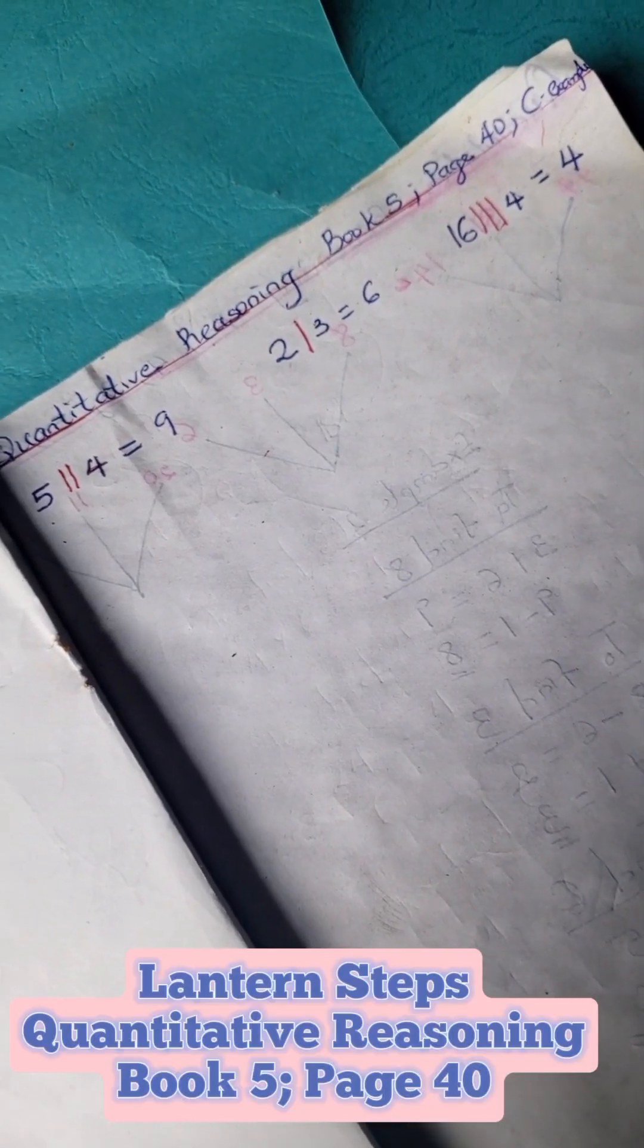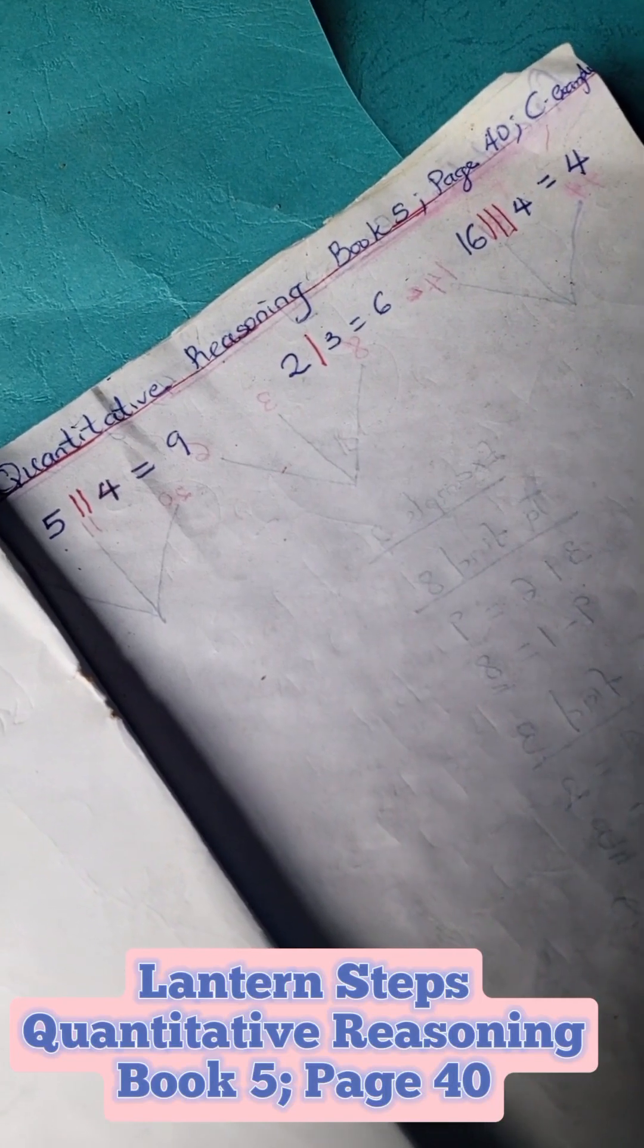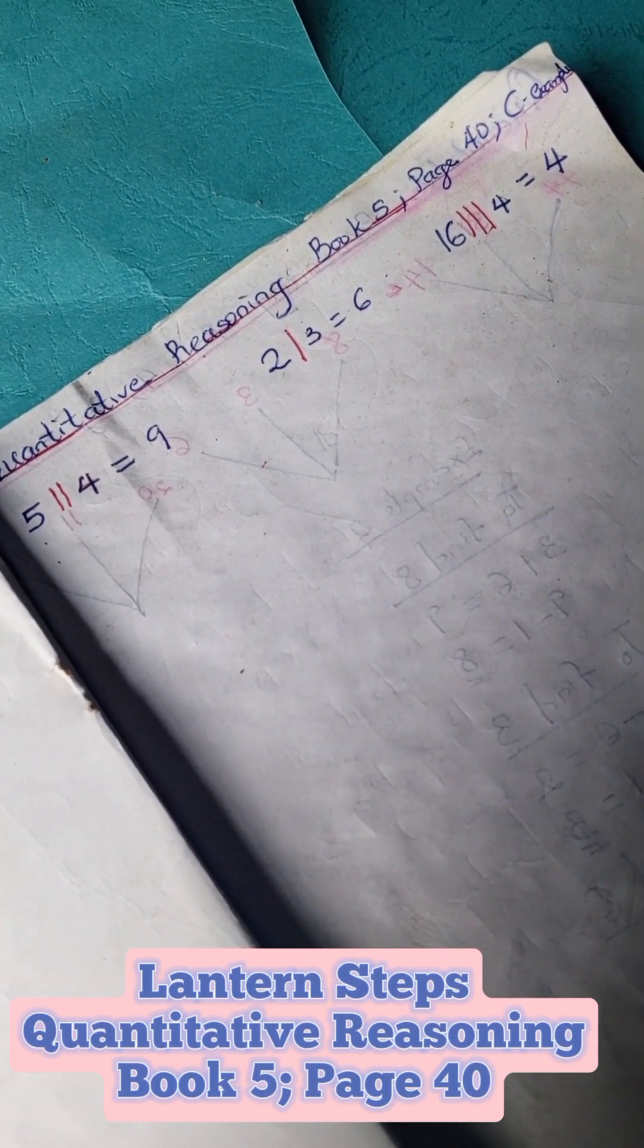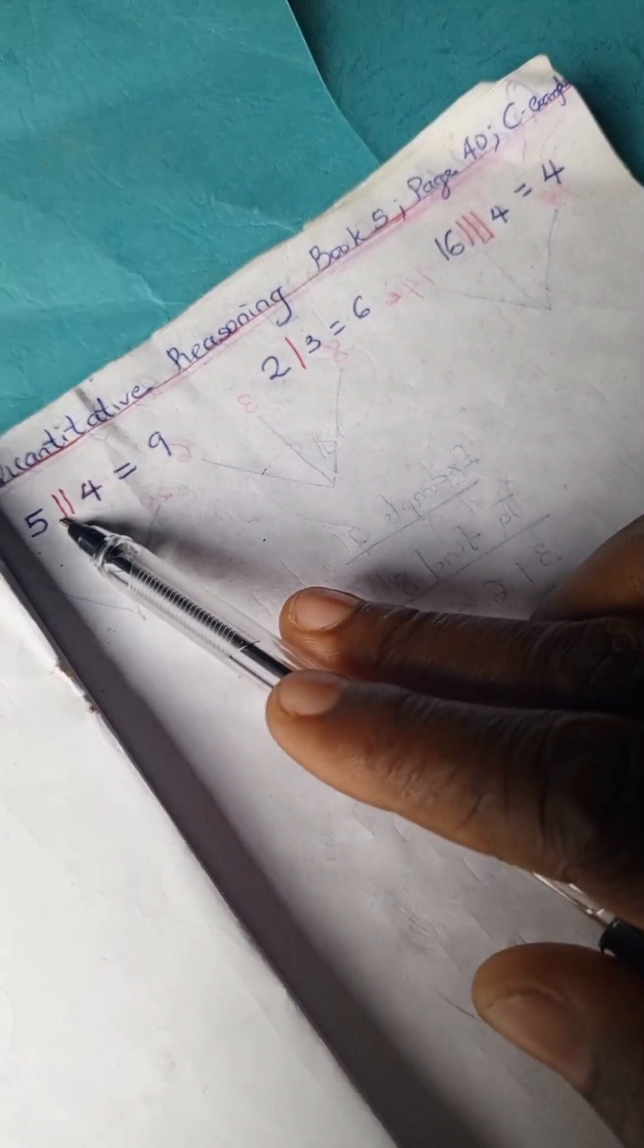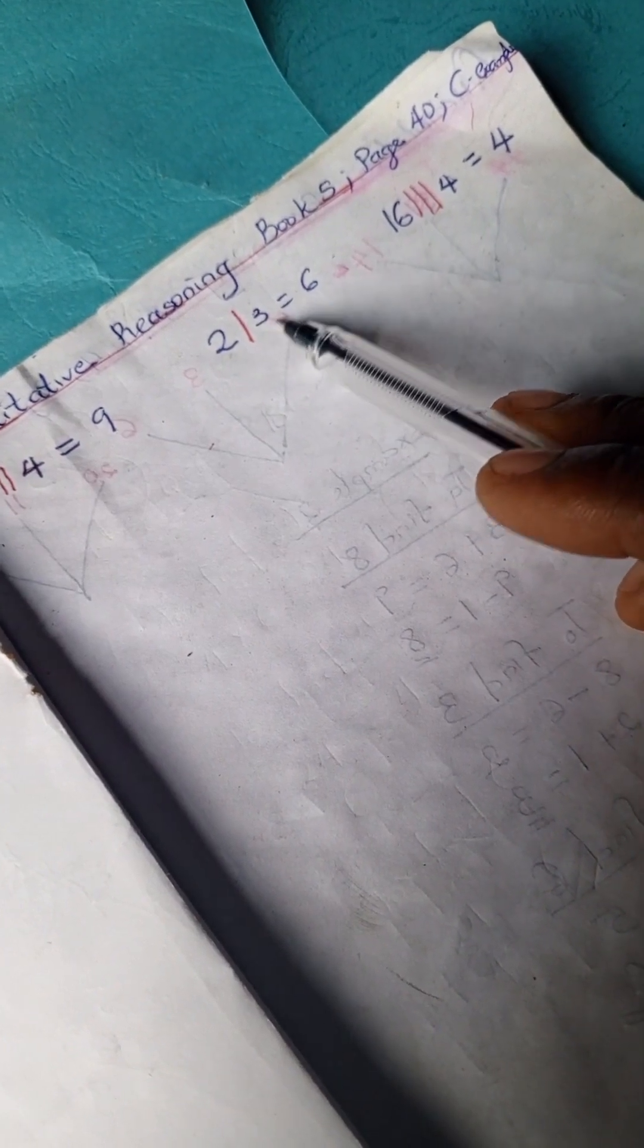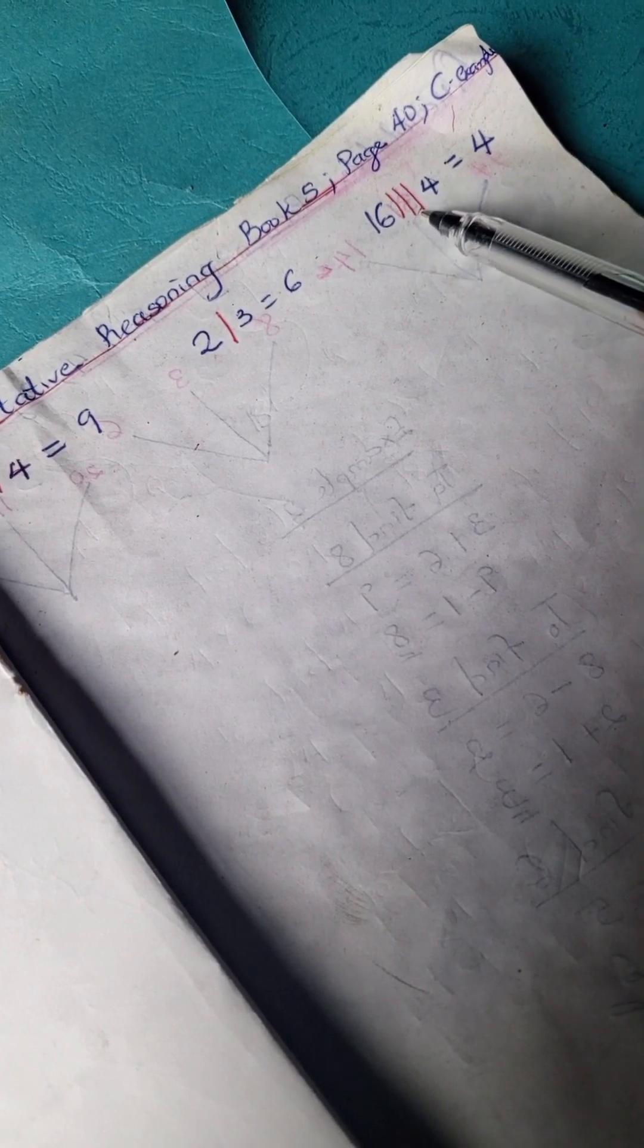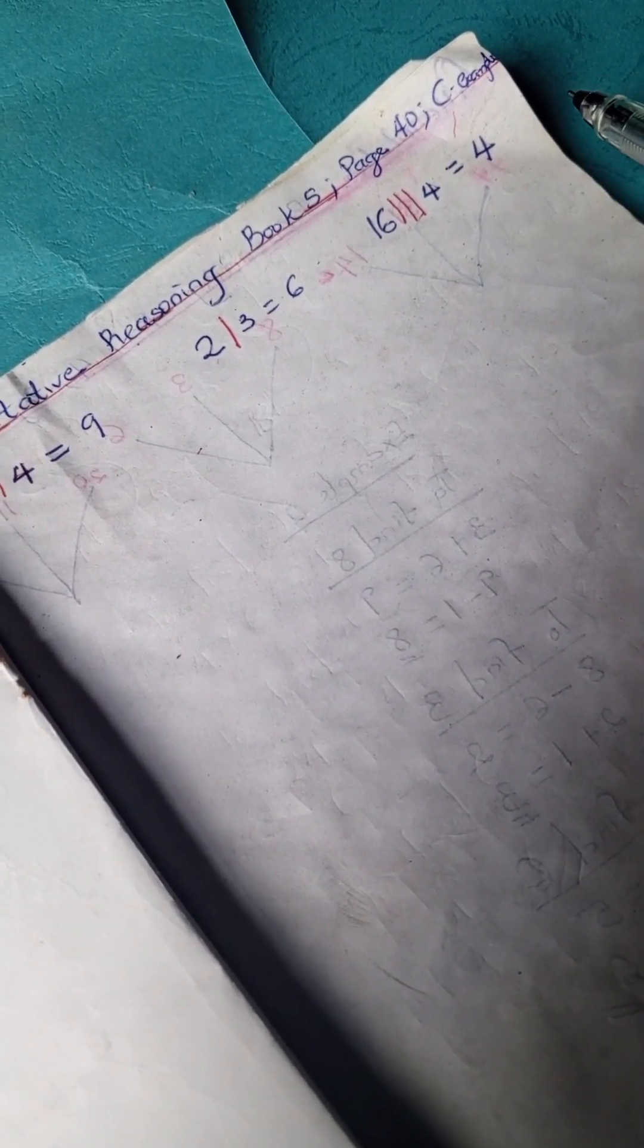Welcome to quantitative reasoning solution section. We have a problem on quantitative reasoning book 5, page 40, exercise C. Looking at this problem, we have 5 double stroke 4 equals 9, 2 single stroke 3 equals 6, and 16 triple stroke 4 equals 4.